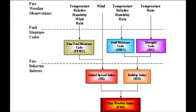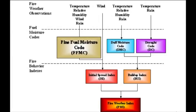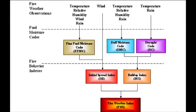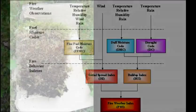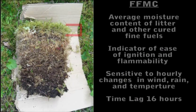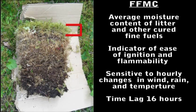The Fine Fuel Moisture Code, or FFMC, represents the moisture content of litter and fine-cured fuels. It expresses the ease of ignition and fuel flammability. FFMC is sensitive to hourly changes in wind, rain, and temperature with a time lag of roughly 16 hours.